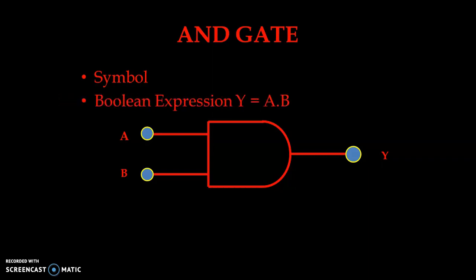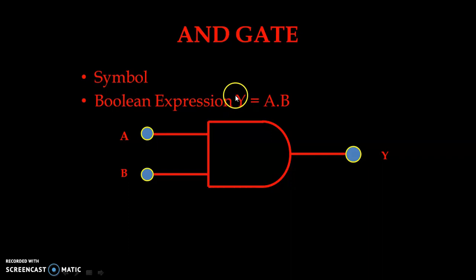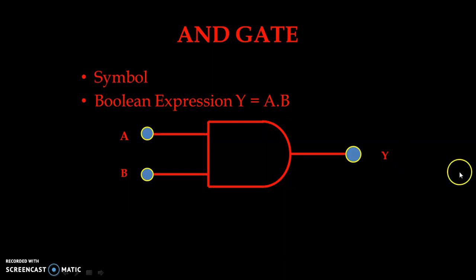We have the boolean expression. The AND gate can be written in mathematical form with the boolean expression. We write Y — Y is the output — Y is equal to A dot B. For the AND gate we use the dot operator, so A·B. The output high condition must be fulfilled when A and B both are at high condition.